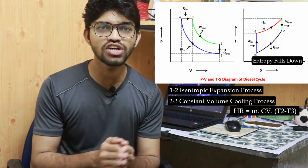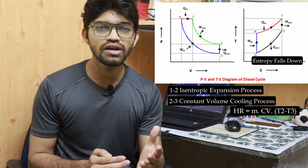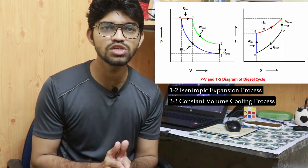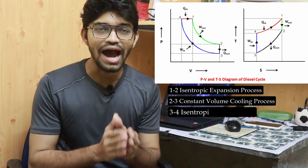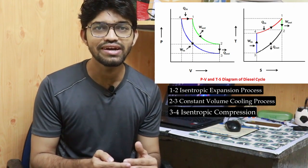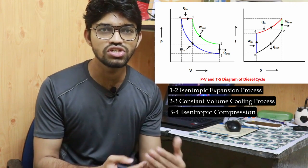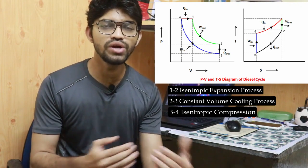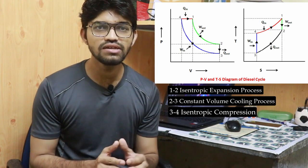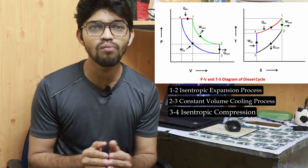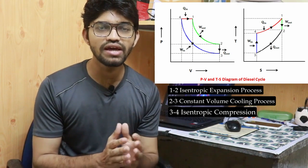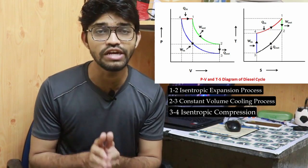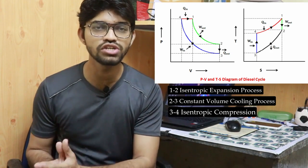After heat rejection at constant volume, compression occurs. Process three to four is the isentropic compression process. There is no heat exchange in the system — this is the adiabatic, no heat transfer process. The piston moves from bottom dead center to top dead center, compressing the air inside the engine cylinder. As a result, temperature increases, pressure increases, and since it is isentropic, entropy remains constant.